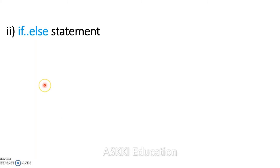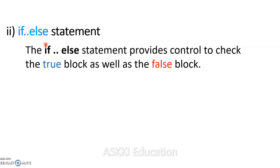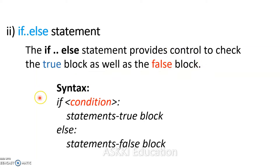Now we will see the if-else statement. The if-else statement provides two-way branching — there will be a true block as well as a false block. If the condition is true, the true block executes; if the condition is false, the false block executes. The syntax is: if condition, statements in the true block; else, statements in the false block. The colon is part of Python syntax.